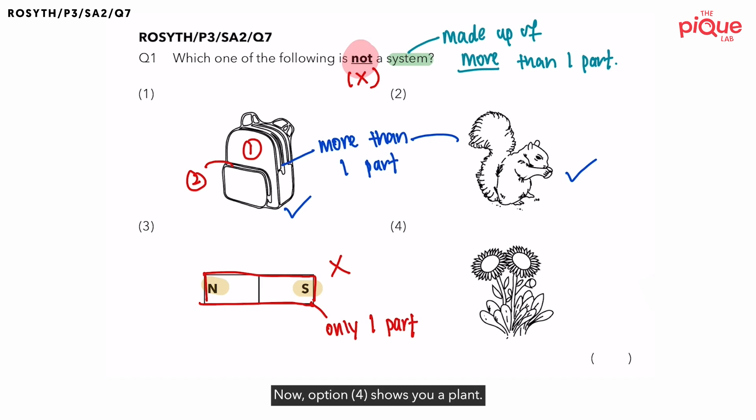Option 4. Now, option 4 shows you a plant. Can you tell me, is plant a living or non-living thing? Plants must be living things. And all living things, they are made up of different parts.